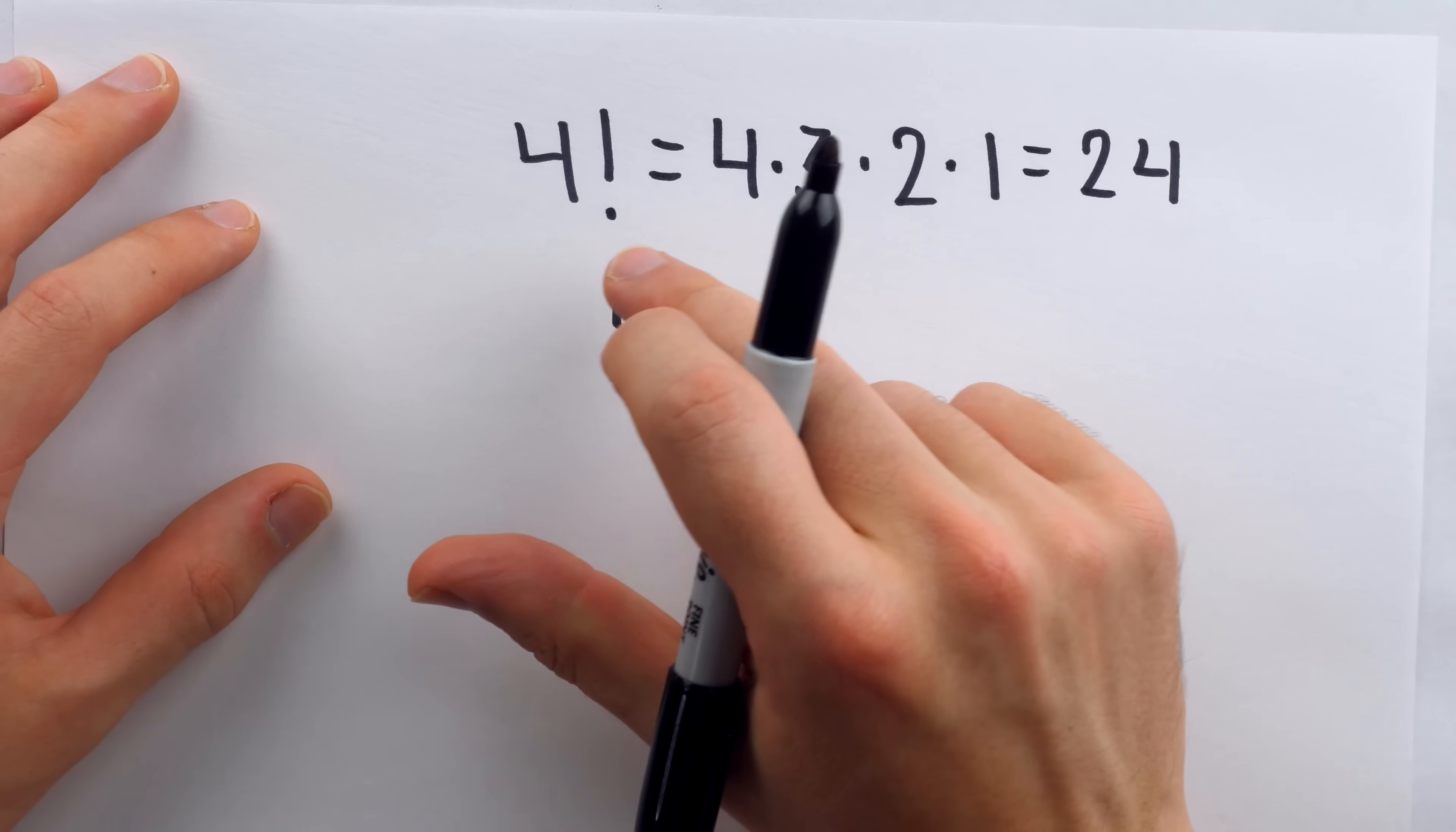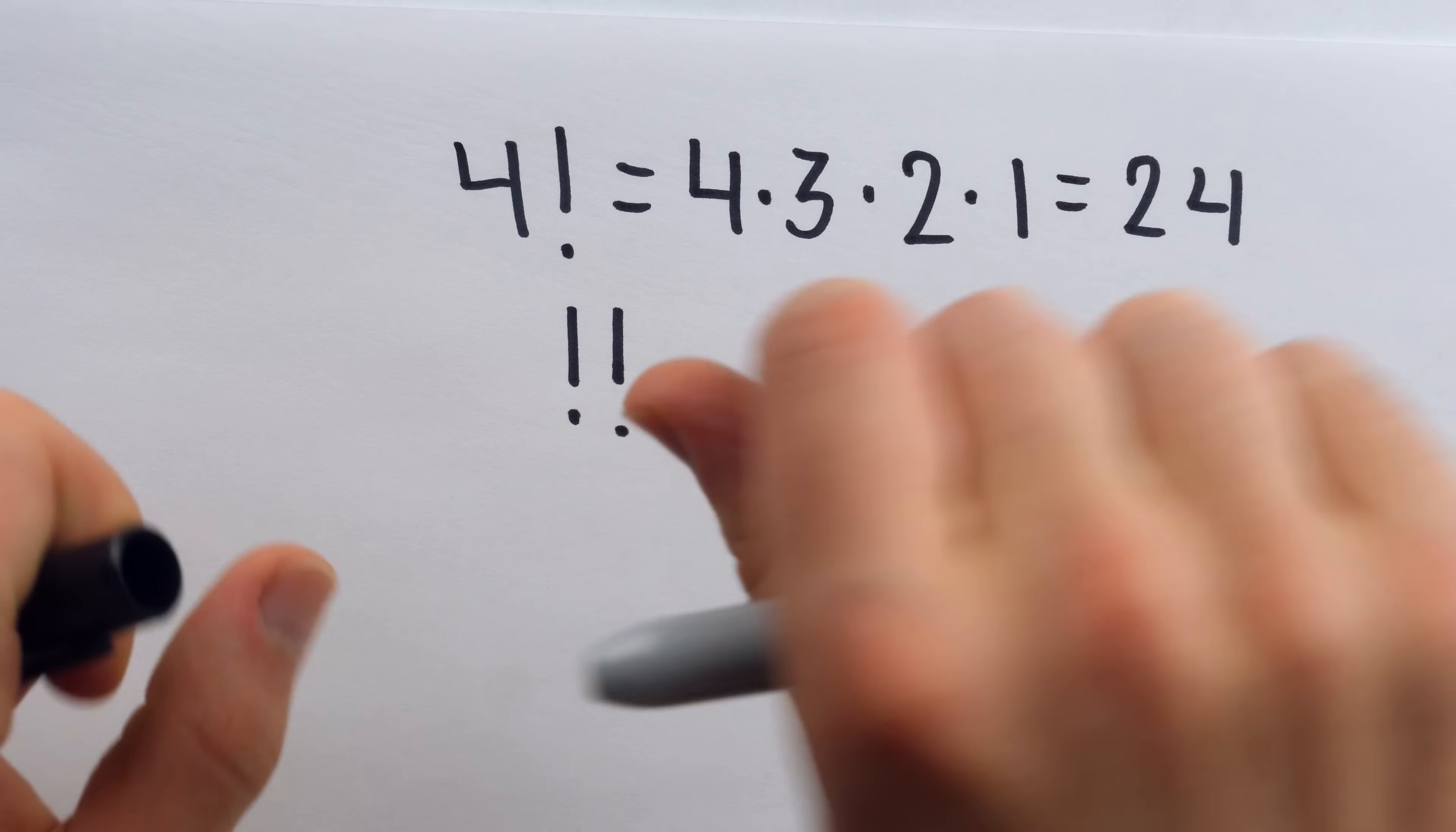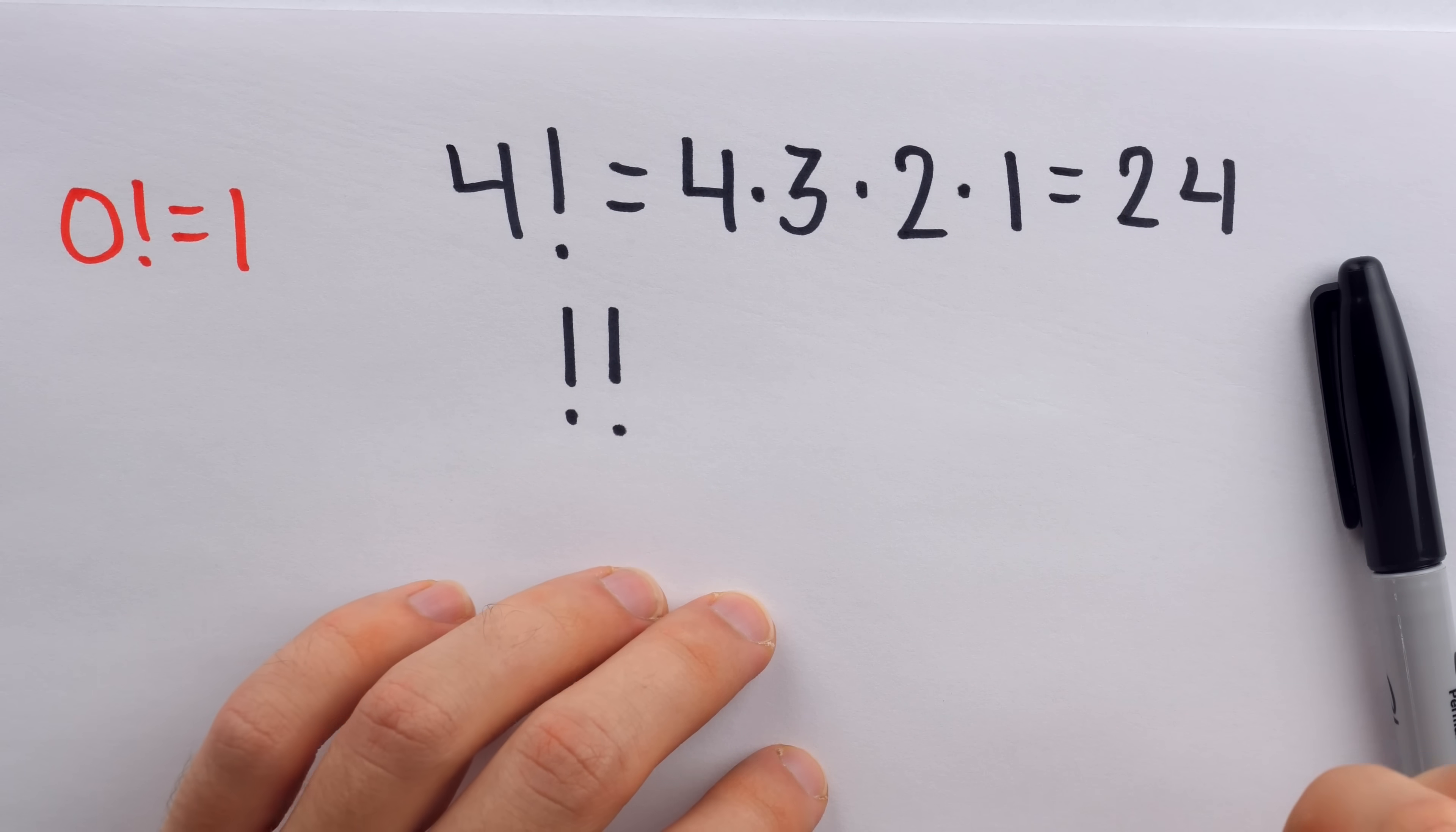I think people get a real kick out of the factorial when they first see it because it's really the first time since the period that an English grammar symbol has been stolen away for mathematics. Now, like I said, we take factorials of positive integers, but you can also take the factorial of 0, which we define to equal 1. So 0 factorial, that's defined to equal 1, and you can look up lots of other videos talking about why that's a good choice if you care to do that.